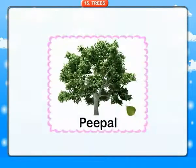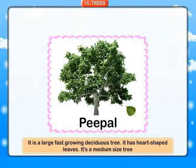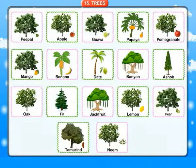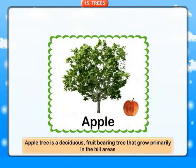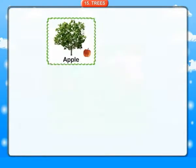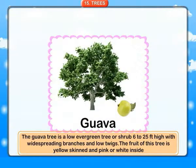Trees. People tree: a large fast-growing deciduous tree with heart-shaped leaves. It is a medium-sized tree. Apple: an apple tree is a deciduous, fruit-bearing tree that grows primarily in hill areas. Guava: the guava tree is a low evergreen tree or shrub, 6 to 25 feet high, with wide spreading branches and low twigs.